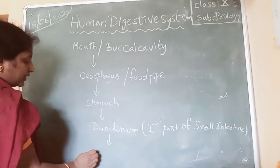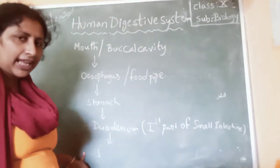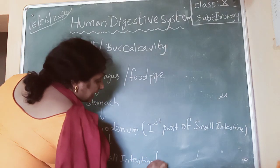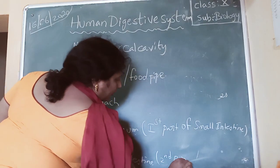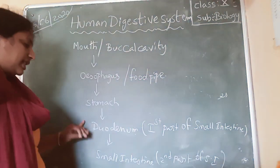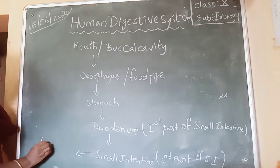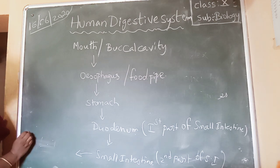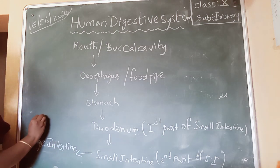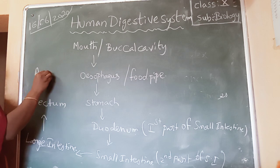From the duodenum, the food enters into the second part of the small intestine, called the jejunum — but you can just write small intestine. From the small intestine, it passes through the large intestine, then from the large intestine to the rectum, and from the rectum it is sent out through the anus.